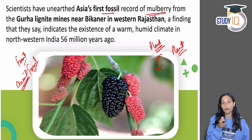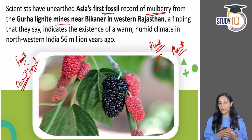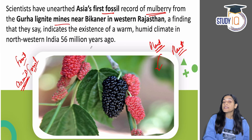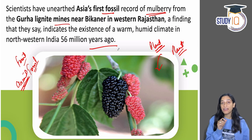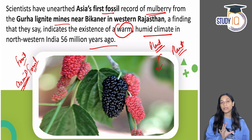Mulberry — शहतूत — if you know it, it's a tasty fruit. Its fossil has been found at the Gurha lignite mines near Bikaner in western Rajasthan. This indicates that because we know what kind of environment mulberry grows in, and this fossil is 56 million years old, at that time Rajasthan — which today is a dry, arid state — must have had a warm and humid climate 56 million years ago in northwestern India.